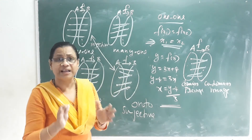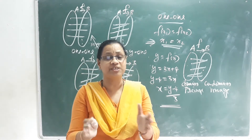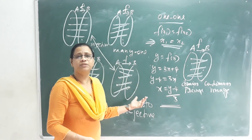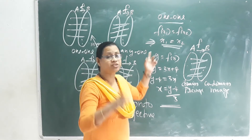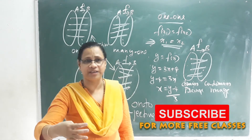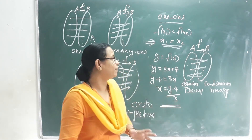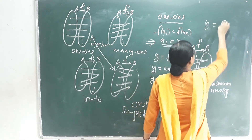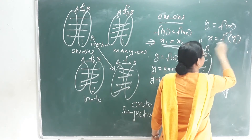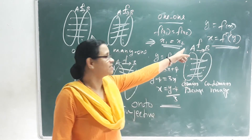The inverse and invertible functions exist only for bijective functions. To find the inverse, first prove the function is one-one, then prove it is onto. If both conditions are satisfied, the function is bijective. Then, set y = f(x), solve for x = f⁻¹(y), and that gives us the inverse function.